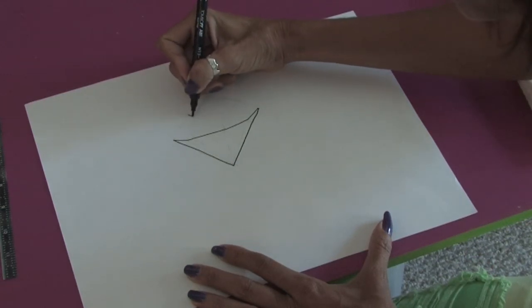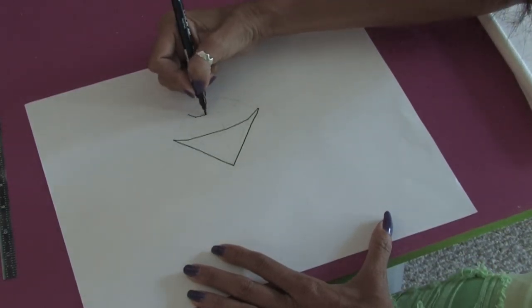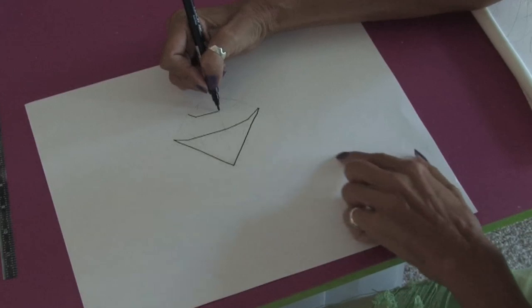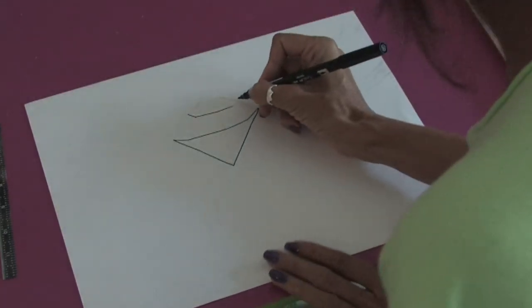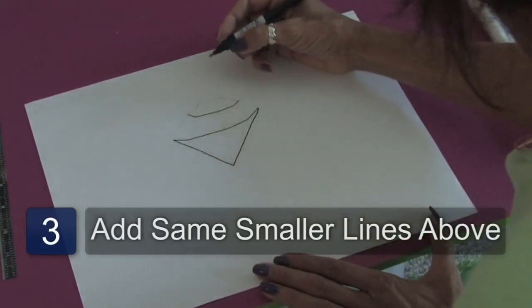Then we'll go to the top here and kind of follow the lines but make them a little bit smaller. And again, connect it back to this corner.